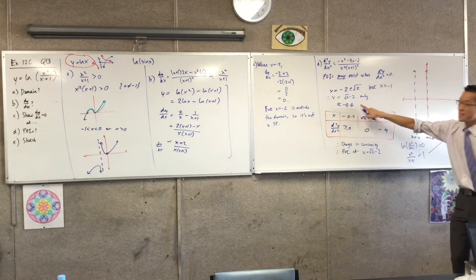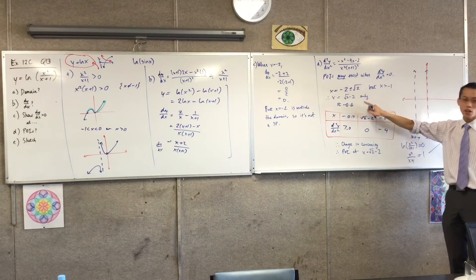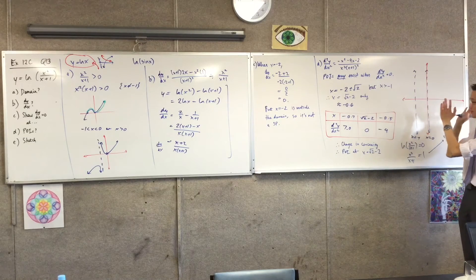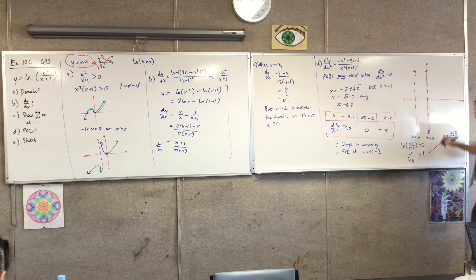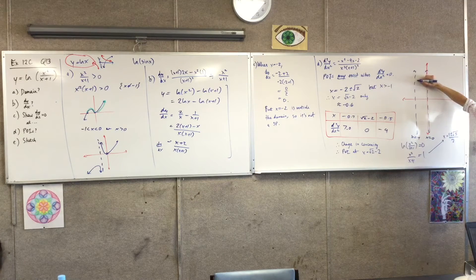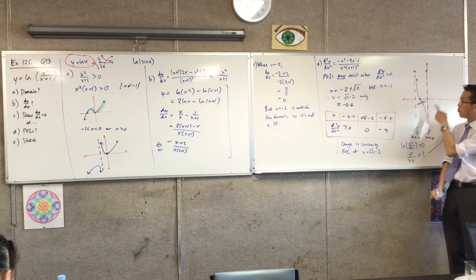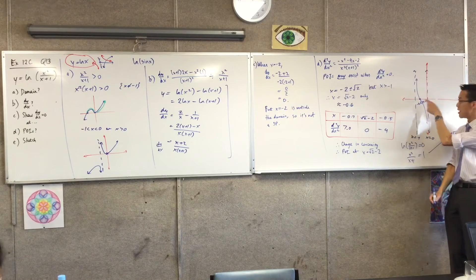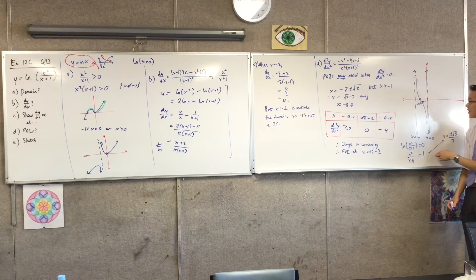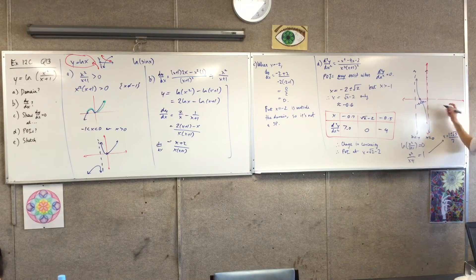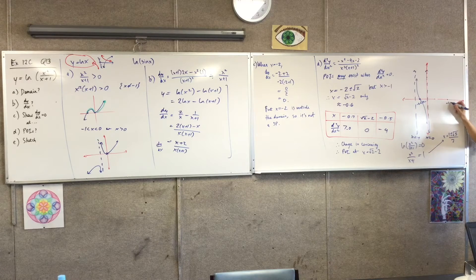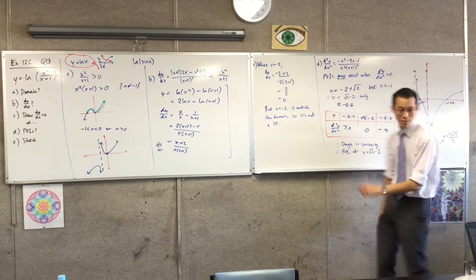Now, minus 0.618 is awfully close to my point of inflection, so for all practical purposes, I'm going to put them one on top of another. There's my point of inflection right next to it, and there's the intercept I got from solving this. Over on the right-hand side, 1.618 would be a bit further — if that's 0.618 on the left, 1.618 is a bit further to the right. You can check by signs and you're going to get that kind of shape over there.